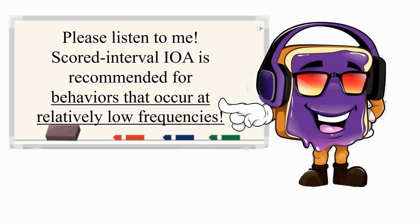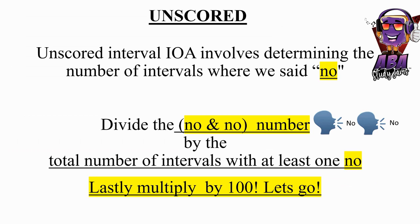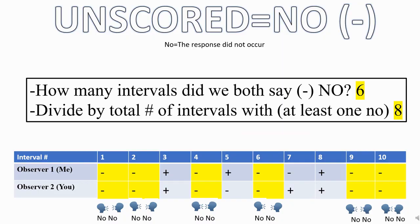Unscored interval IOA involves determining the number of intervals where both observers said no. Divide the no-and-no count by the total number of intervals with at least one no, then multiply by 100. For example: how many intervals did we both say no? Six. Divide by total number of intervals with at least one no — eight. Multiply by 100. The IOA is 75%.